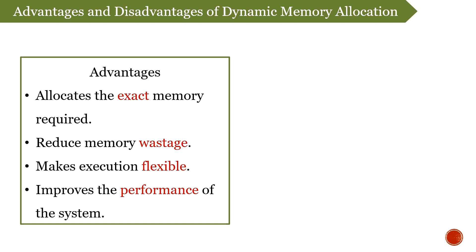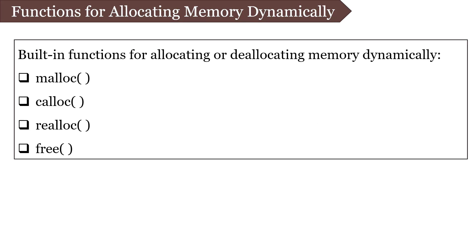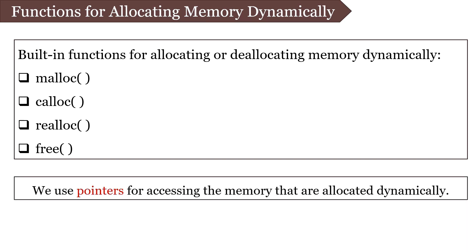But with these advantages, there are two noticeable disadvantages. As memory is allocated at runtime, it increases the overhead of the operating system, which leads to slowing down of execution. Now, there are some built-in functions used for allocating and deallocating memory dynamically: malloc, calloc, realloc, and free. Among these four, malloc, calloc, and realloc are used for allocating memory, and free is used for deallocating memory. Also, we use pointers for accessing the memory that is allocated dynamically.